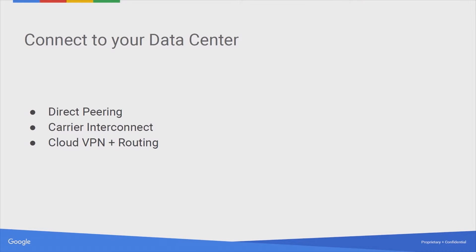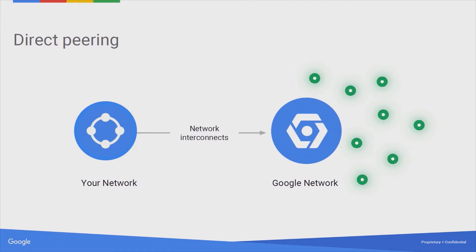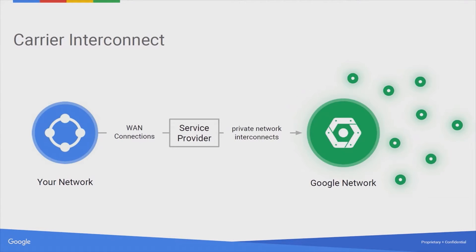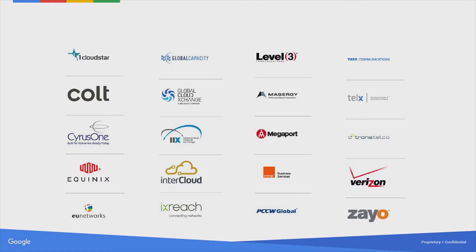When it comes to connecting to your data center — because we're thinking about hybrid cloud — you have multiple options. You can connect via VPN: use the public internet to connect your data center with Google Cloud Platform in a secure and encrypted way using Cloud VPN. But you can also use direct peering, which is about connecting your network directly to Google Cloud with a direct cable. Or you can use a service provider in between that guarantees bandwidth — a cheaper option than using your own cable — with providers including Equinix, Level 3, Verizon, and others.